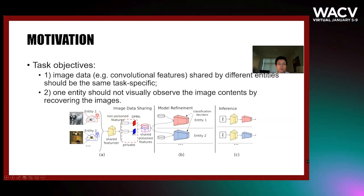There are two objectives. First, image data shared by different entities should be task-specific so that one entity could utilize data shared from various entities for its own model training. Second, one entity should not be able to visually observe the image contents by recovering the image from the shared image data. By these two objectives, image data are securely shared among entities. With the image data sharing, each entity could refine its model training with an enlarged training set, and thus obtain a more robust model for the specific vision task.